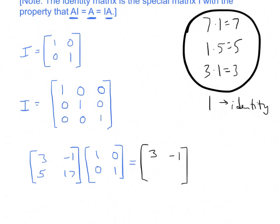For the last two, you've got 5 and 17 times 1 and 0, so only the 5 survives. And then finally, 5 and 17 times 0 and 1, and only the 17 makes it out. Notice that the answer that you get is the same thing as the original matrix that we started with. That's what the identity is supposed to do.